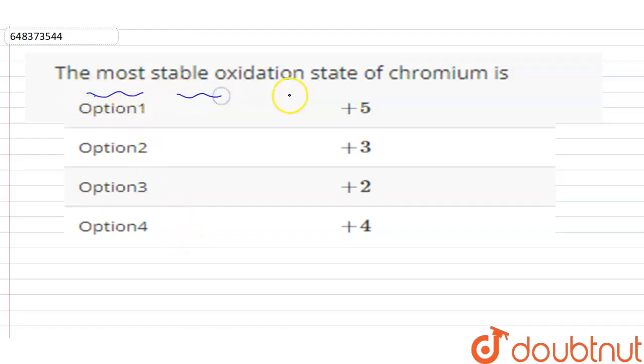The most stable oxidation state of chromium is? And the options are given as +5, +3, +2, or +4.